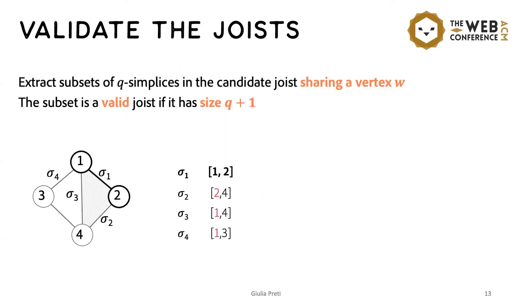So once we have the group of simplices that share a code with a given simplex, we need to determine which subsets form a joist. And we do so by extracting subsets of simplices sharing a common vertex, and then checking if the size is q plus 1. So in this example, we created these two subsets and only the first one satisfied the constraint.